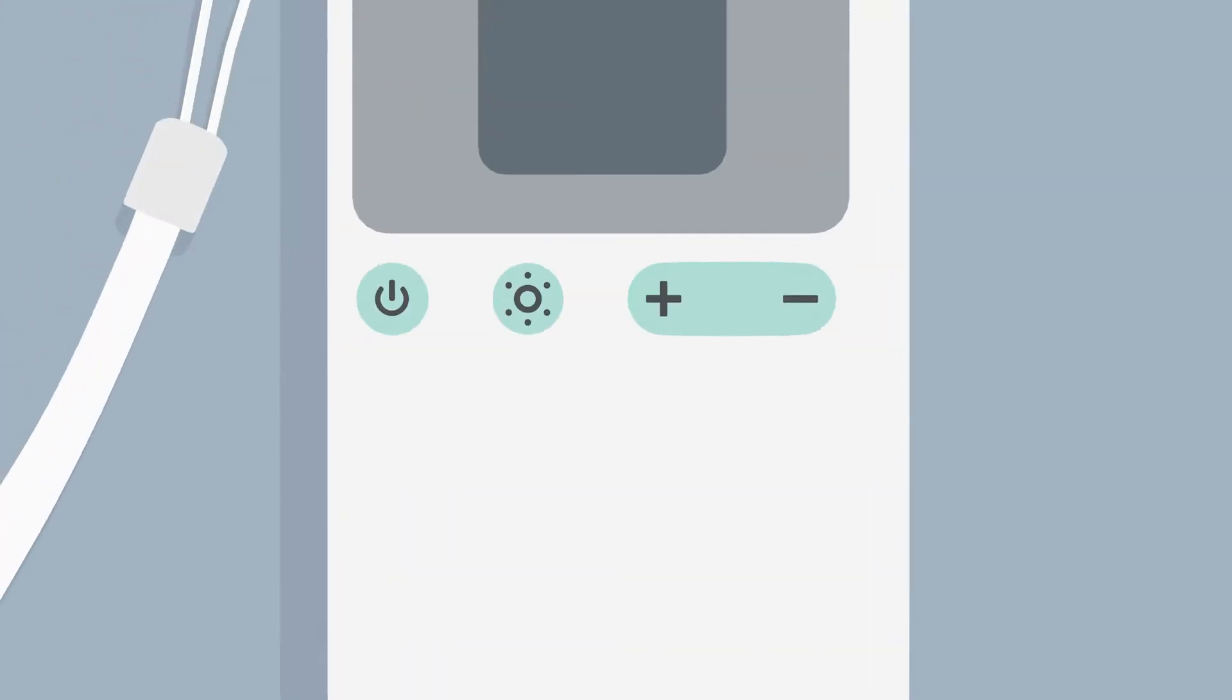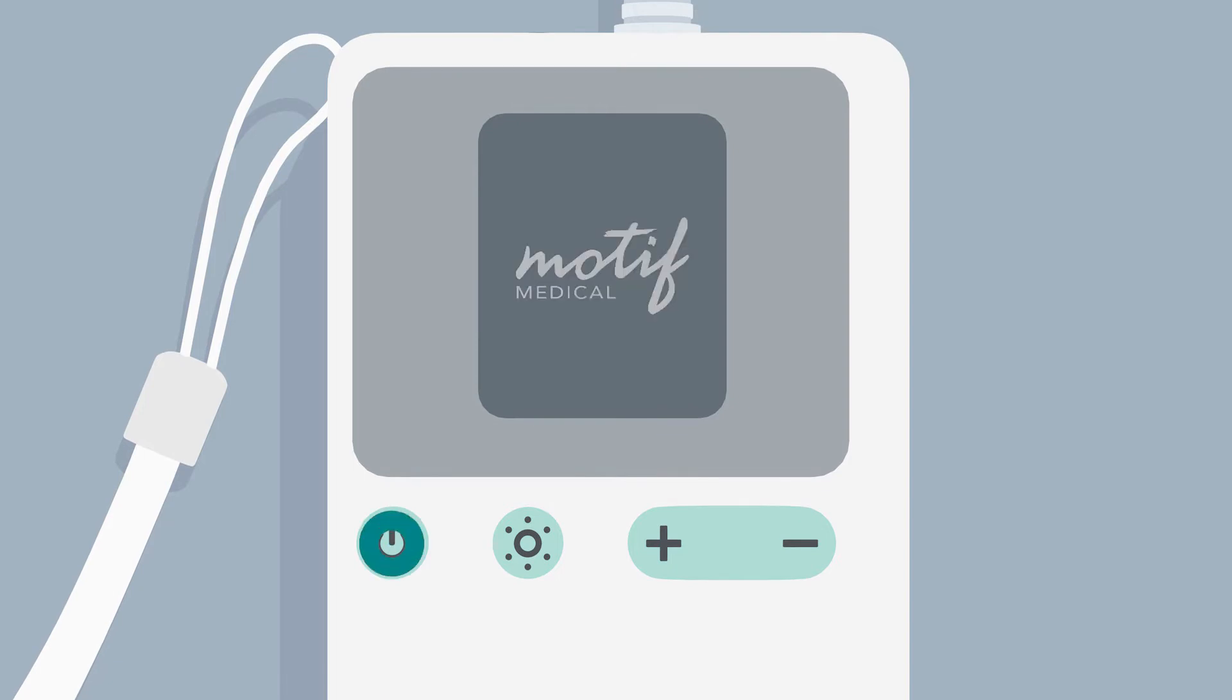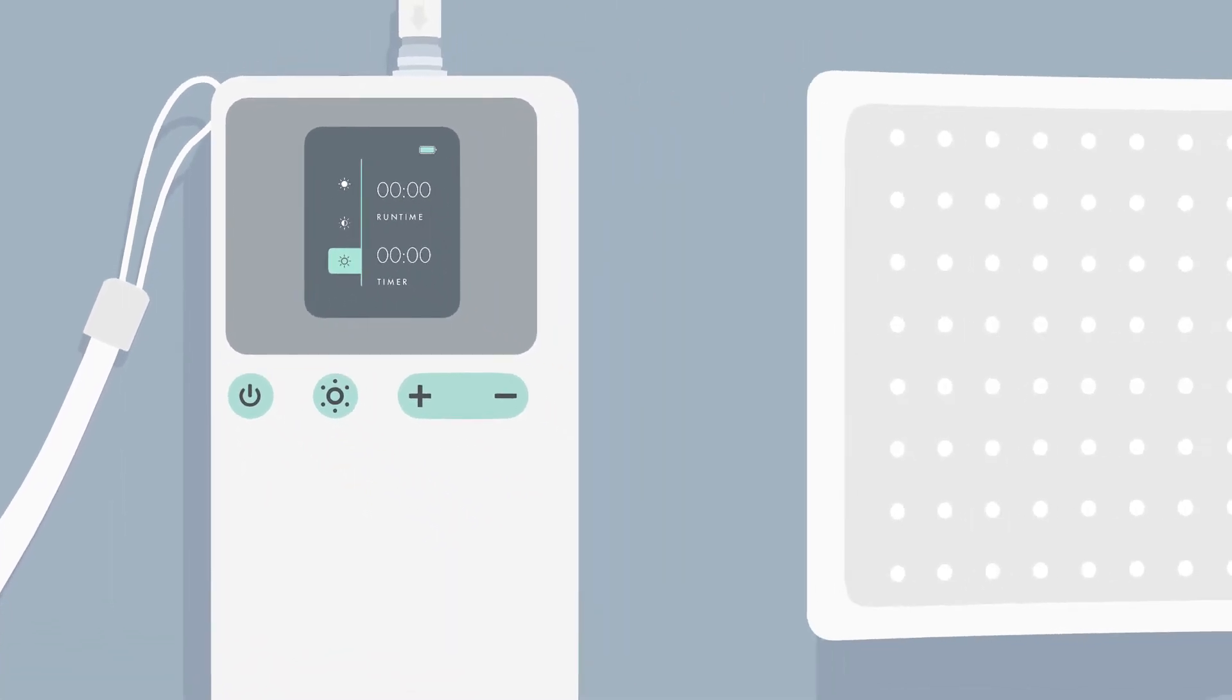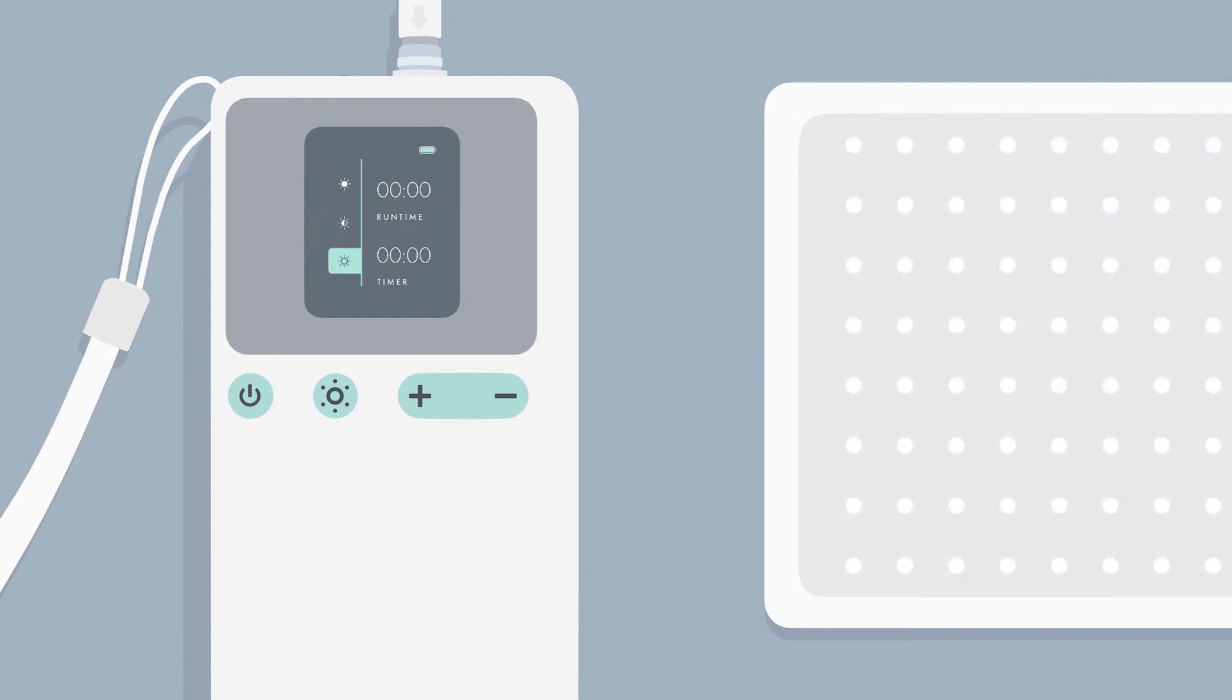The buttons on the control box include the Power button to power the phototherapy device on and off. The Light Intensity Control button allows you to set the light intensity to high, low, or off.